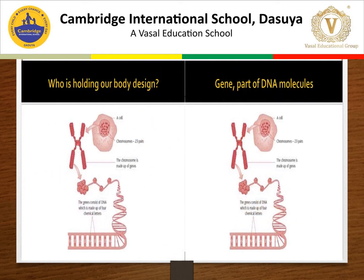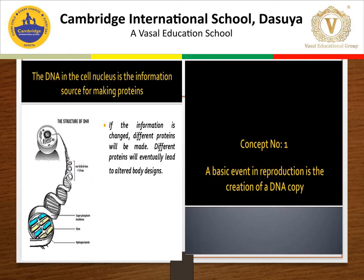Who is holding our body design? The hereditary material stores the blueprint for all body structures, and this hereditary material is DNA. Information is encoded in the sequence of nucleotides in DNA. DNA molecules contain all information to make specific proteins, which in turn form enzymes that control chemical reactions in the body. These chemical reactions govern the metabolism of the body and produce specific characters.